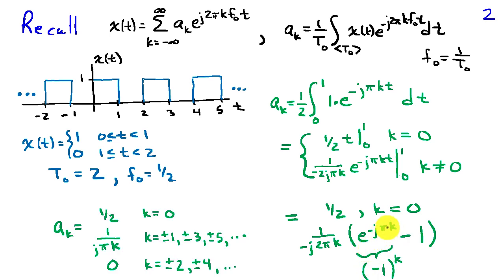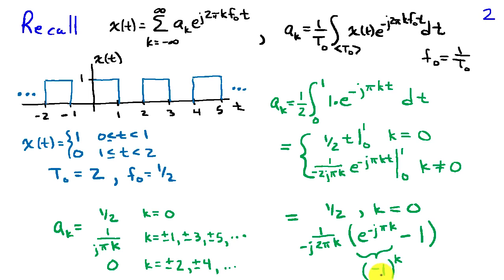Now e to the minus j pi is simply minus 1, so the term e to the minus j pi k is minus 1 to the kth power. When k is even, minus 1 to an even power is 1, and 1 minus 1 equals 0, so a_k is 0 whenever k is even. When k is odd, this becomes minus 1, giving minus 2 for the term in parentheses, which cancels the minus 2 in the denominator, and we end up with 1 over j pi k when k is an odd integer.